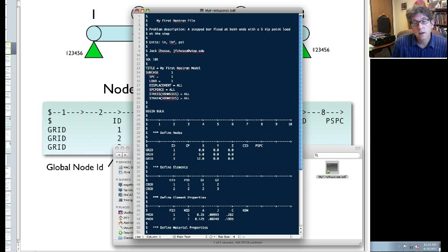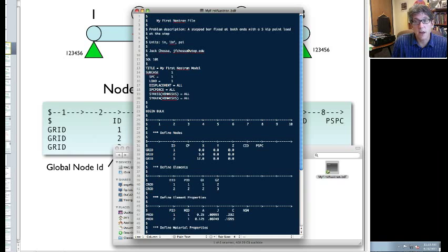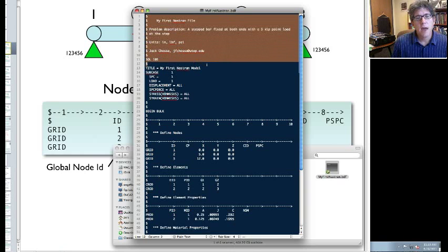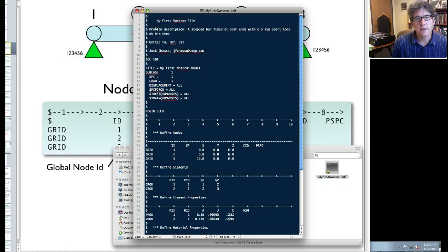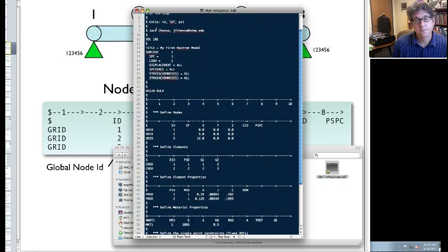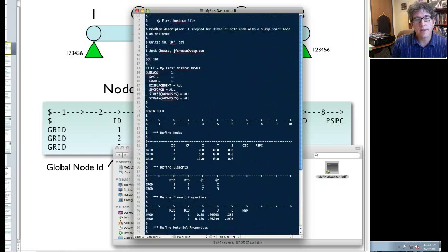Notepad's fine. There's actually other programs that are better suited to doing this stuff, such as like Crimson Editor, but Notepad's fine. Everything with a dollar sign in front of it is a comment line, and NASTRAN ignores that.